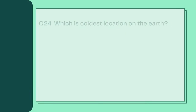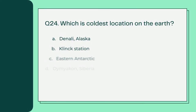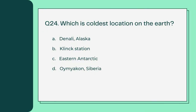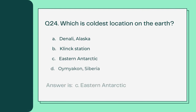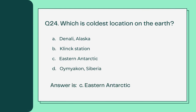Which is the coldest location on Earth? A. Denali, Alaska B. Clink Station C. Eastern Antarctica D. Oymyakon, Siberia. Answer is C. Eastern Antarctica.